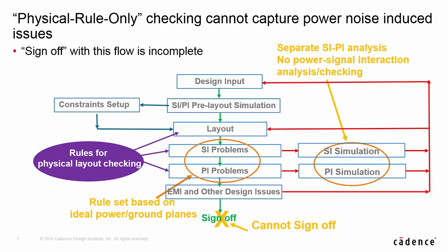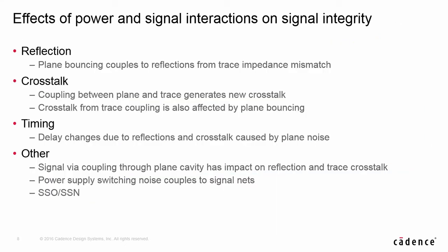So this flow is not complete regarding identifying some serious potential design issues. PCBs signed off with this type of flow will have freedom problems with signal degradation caused by power noise — and worst of all, designers don't even know it. The question is: how do we make the sign-off flow valid again by including identification of power noise-introduced problems?